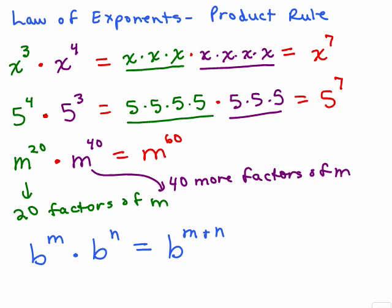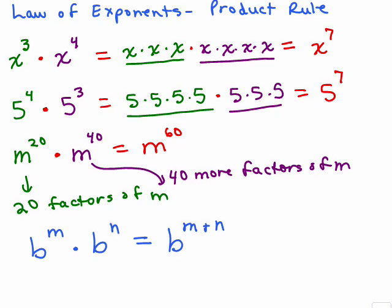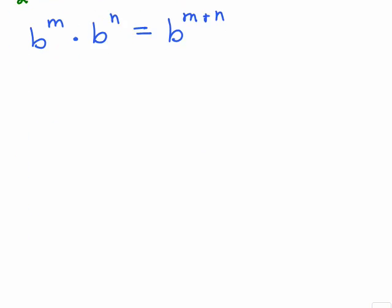You just write the 5 once and then add the exponents. So what you want to do is think about how could you explain what this is saying. If you have the same base, you're multiplying, you're going to write the base once and add the exponents.